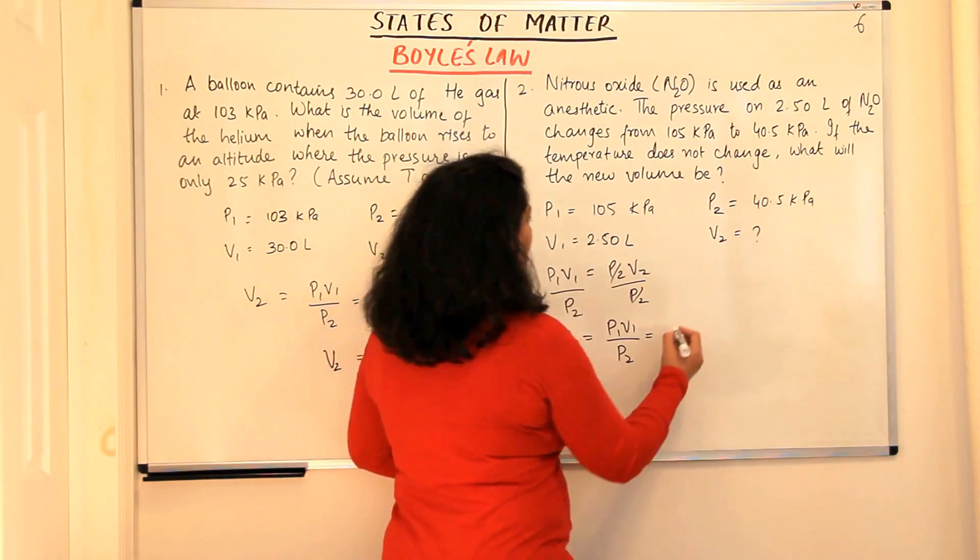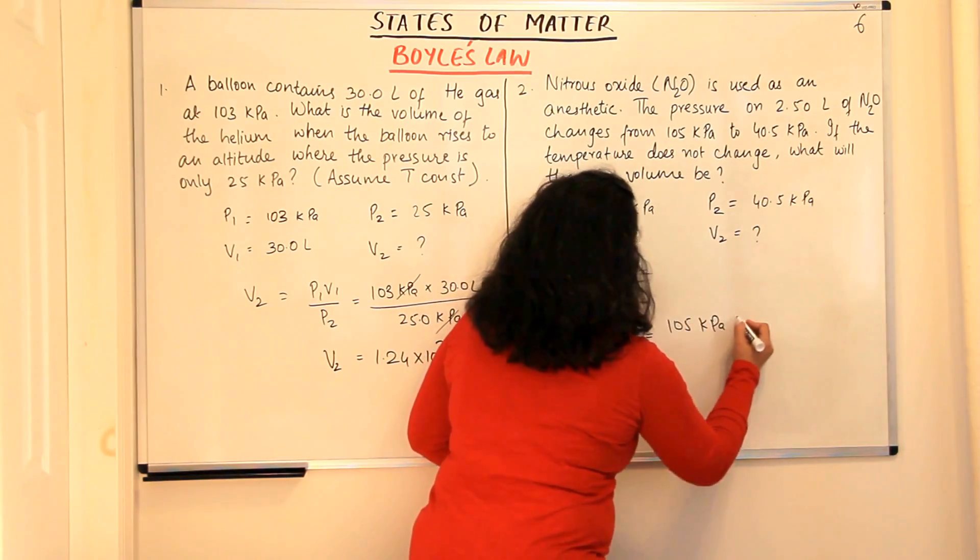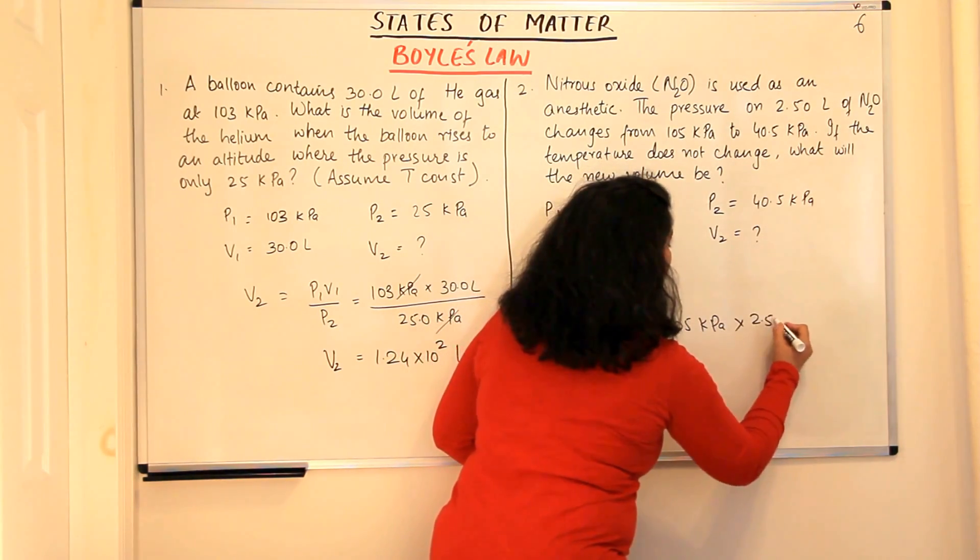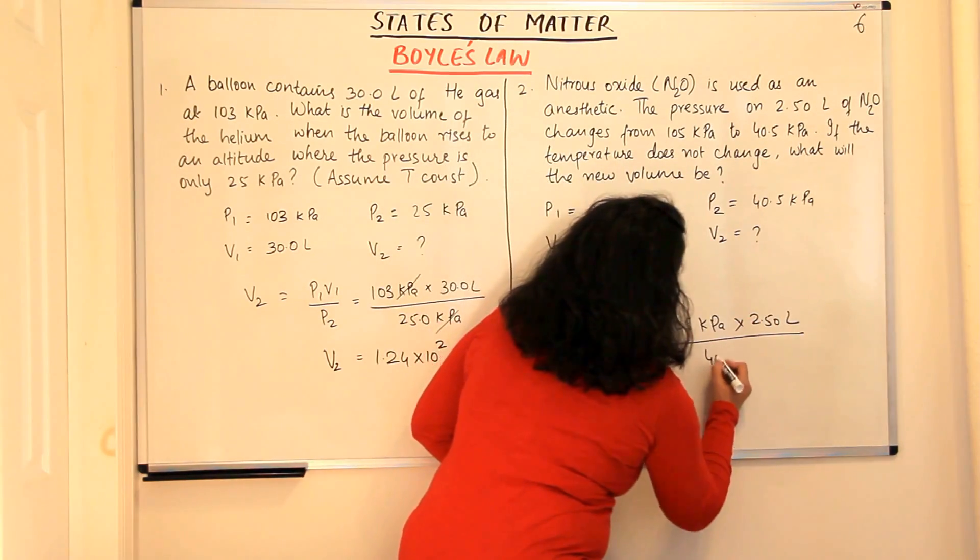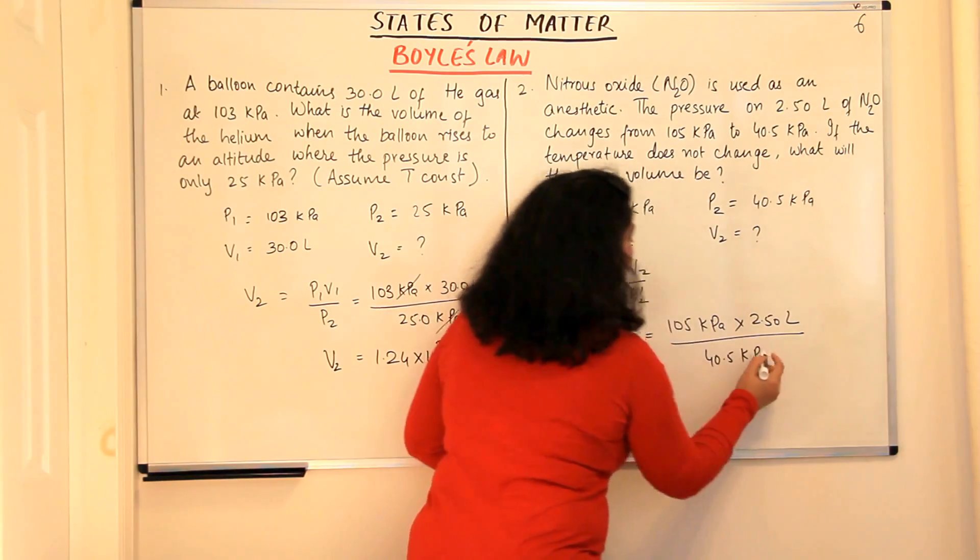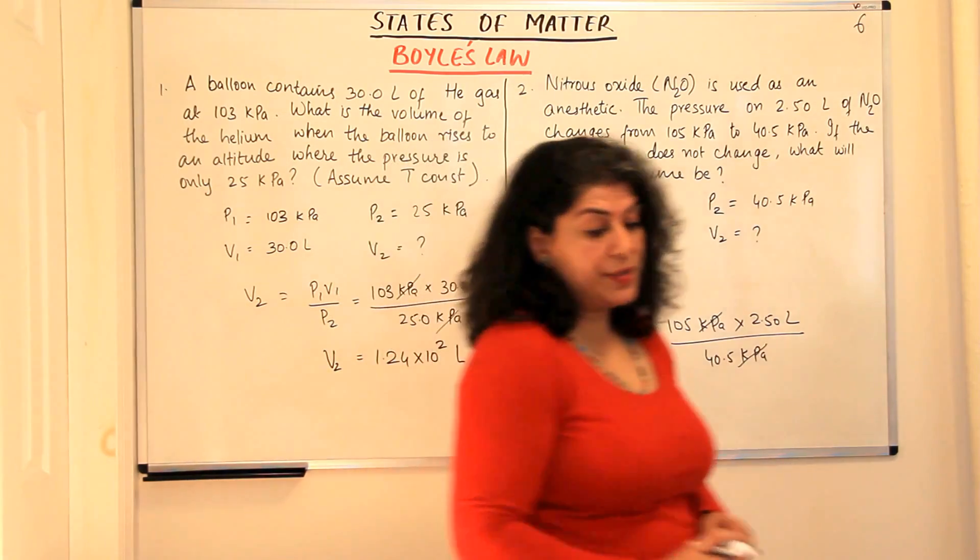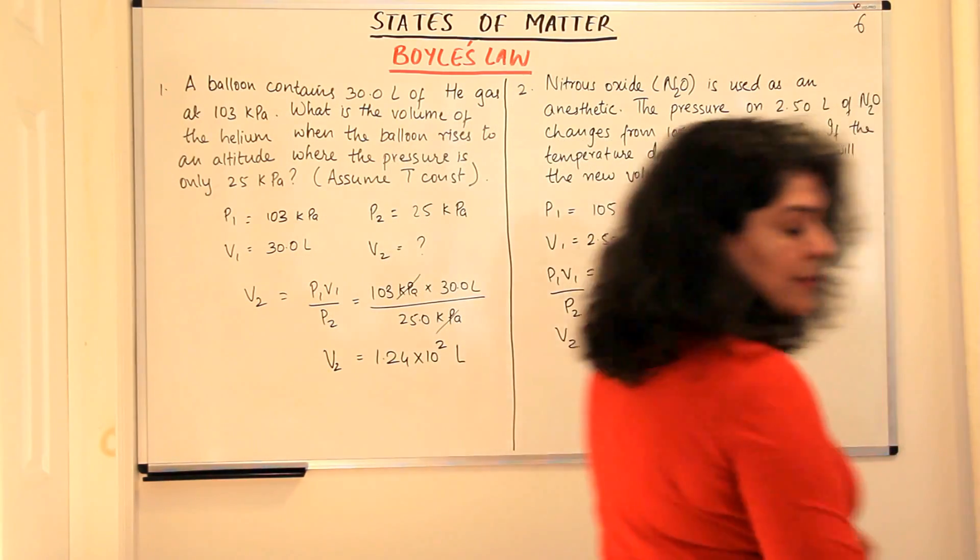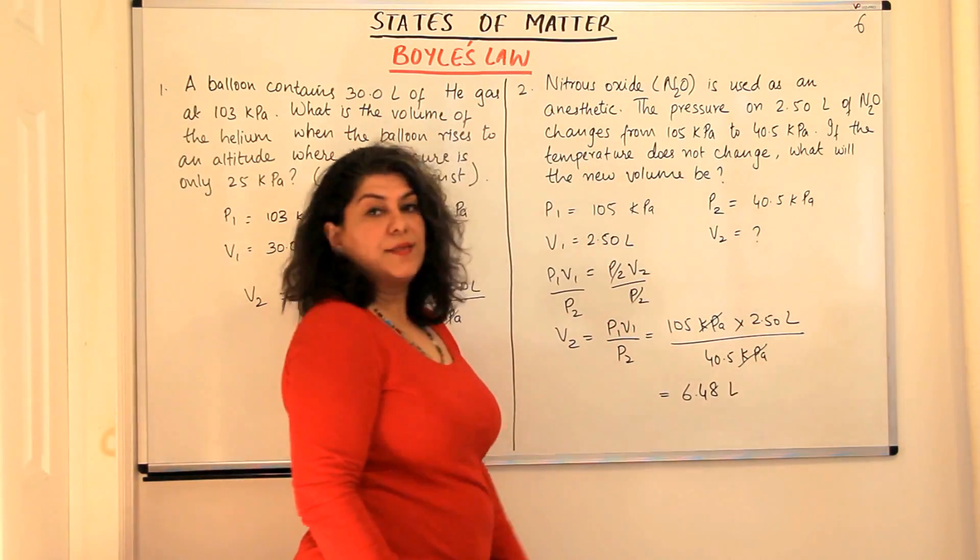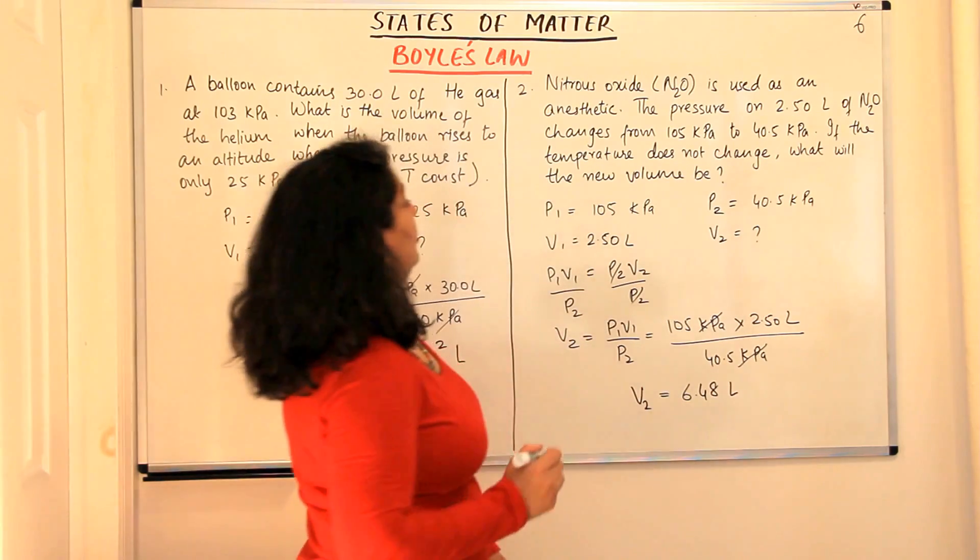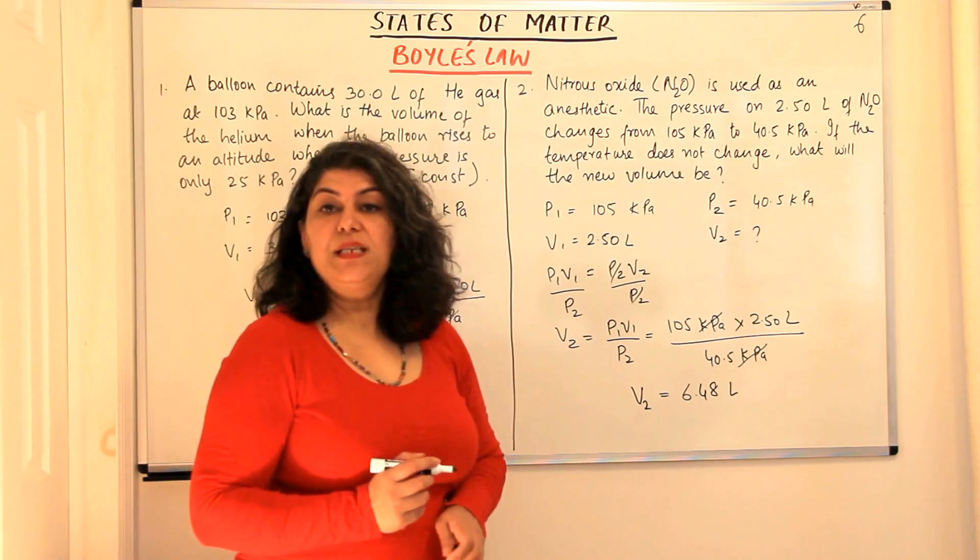Let's substitute the values now. It would be 105 kilopascals into 2.50 litre upon 40.5 kilopascals. The kilopascal, kilopascal get cancelled. The unit you should obtain in the answer should be in litres and when you solve this you get 6.48 litres would be our answer. So the final volume, the new volume of nitrous oxide would be 6.48 litres.